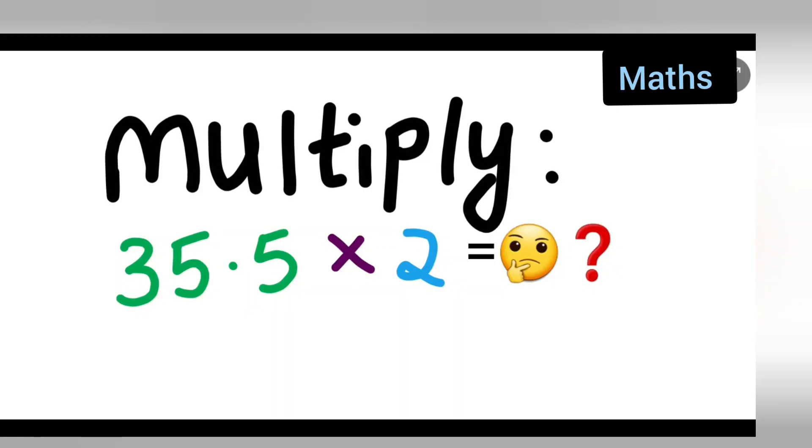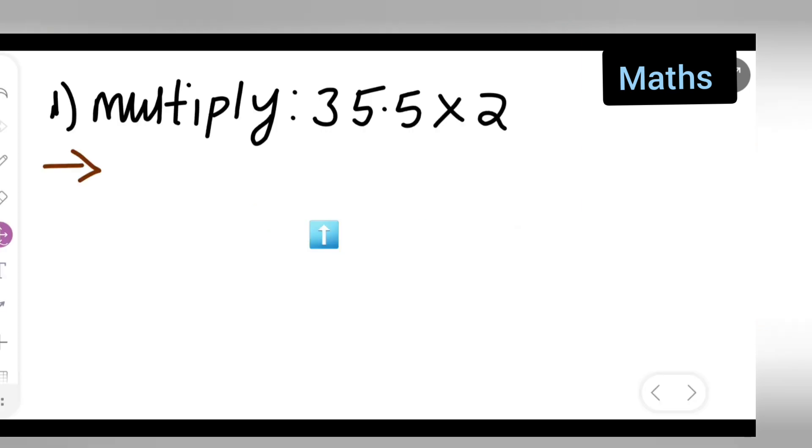Welcome to today's class of mathematics. Today's question is multiply 35.5 multiplied by 2. Let us see how to multiply 35.5 multiplied by 2. First, check down the question: multiply 35.5 multiplied by 2. Now let us multiply this.